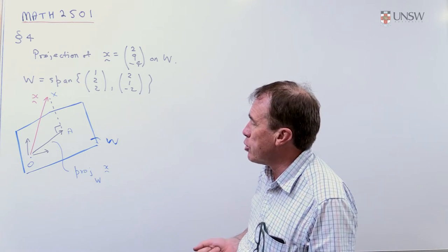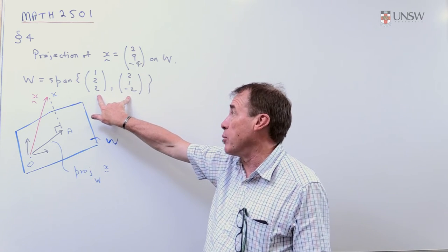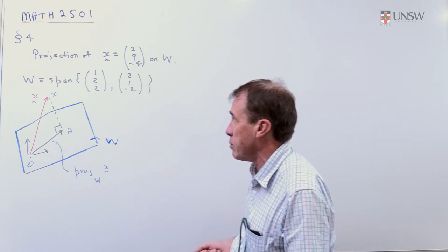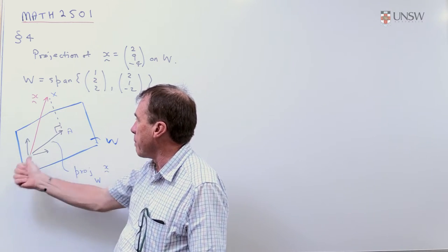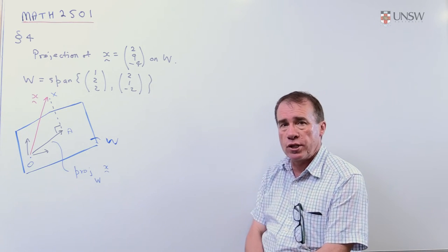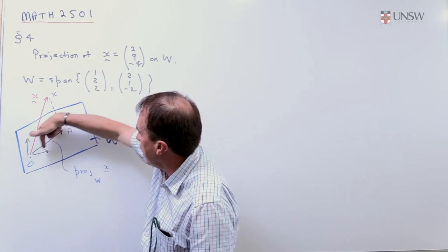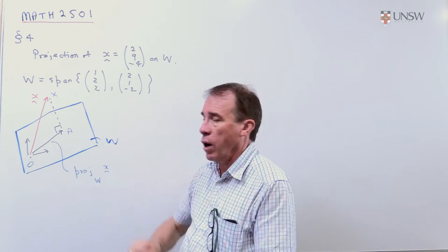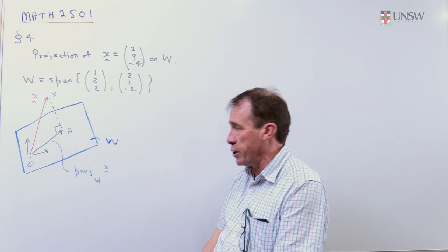So when we talk about the projection, this subspace spanned by these two vectors, they're obviously linearly independent so they're going to span a plane in R³ passing through the origin. I give you the vector X, which is up here. We want to talk about the projection of that onto the subspace. That is geometrically just you shine a torch down on this vector and look at its shadow on the plane. And that vector, this vector OA here, that's going to be the projection of X onto the subspace W.